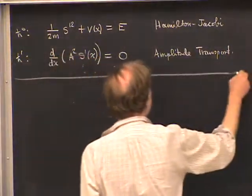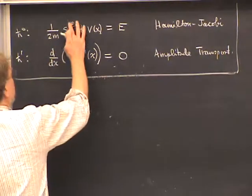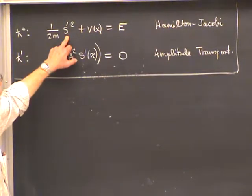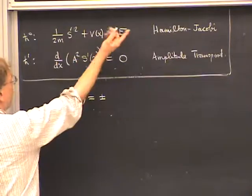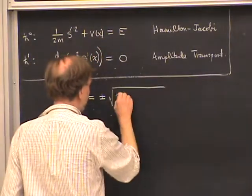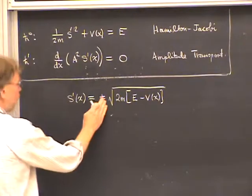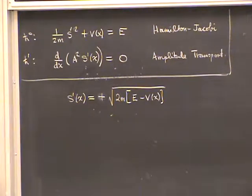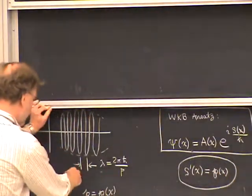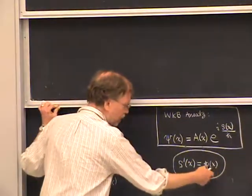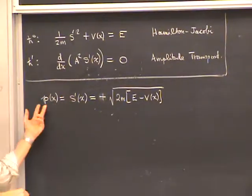Let's solve the Hamilton-Jacobi equation first. Solving algebraically for s′, we find s′(x) = ±√(2m(E − V(x))). Let's take the plus sign for now and worry about the minus solution later. Recall that s′(x) was the momentum from the de Broglie wavelength, so this defines p(x) = √(2m(E − V(x))).